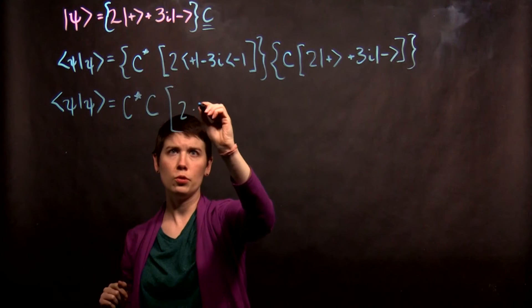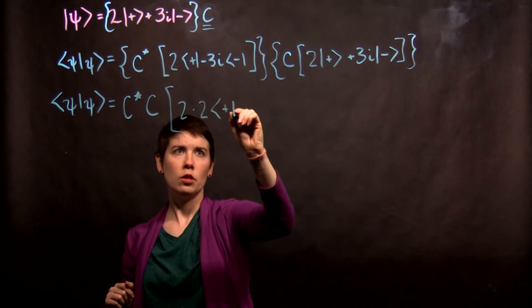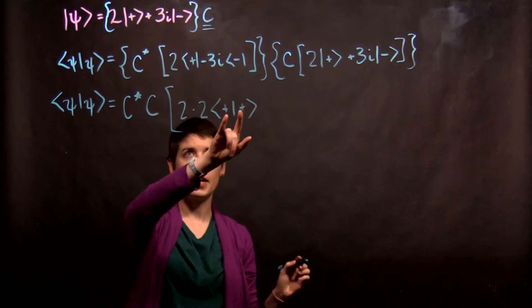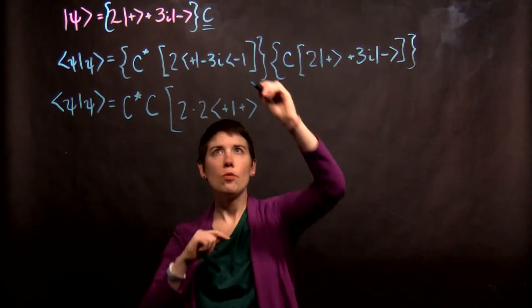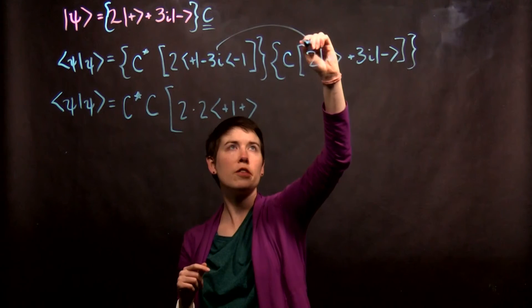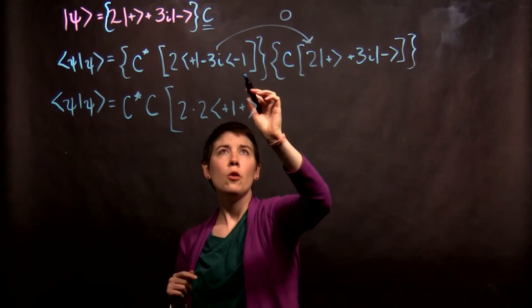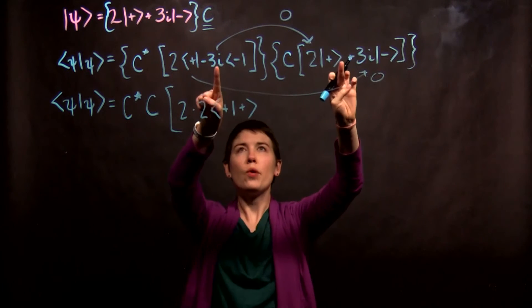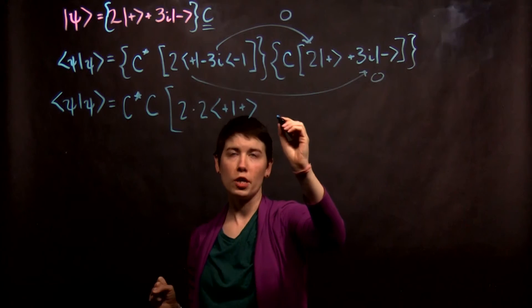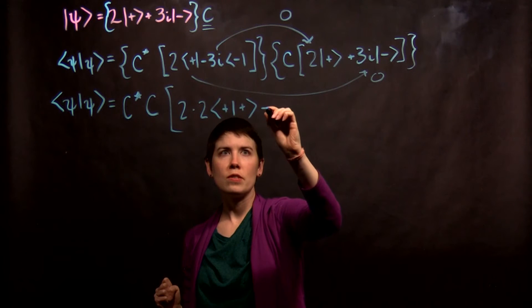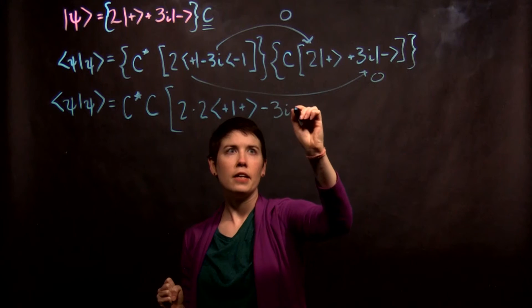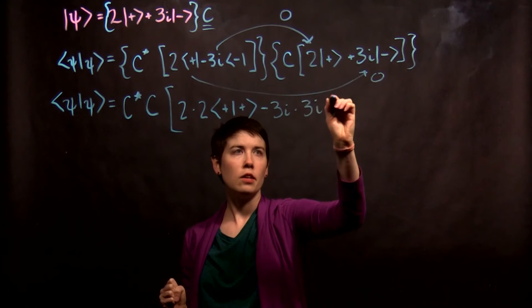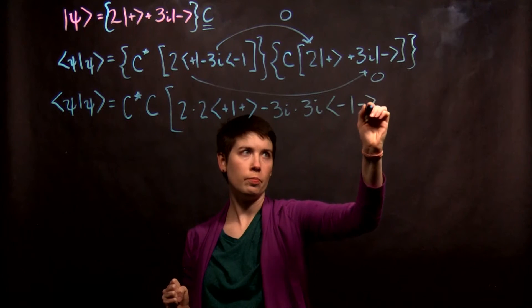So I'm going to have 2 times 2, spin up bracket spin up. And now this term from here to there is going to be zero. And then this term to here is going to be zero. So what I'm left with is this fourth term, and I'm going to do this as negative 3i times 3i. And now again, minus, minus.